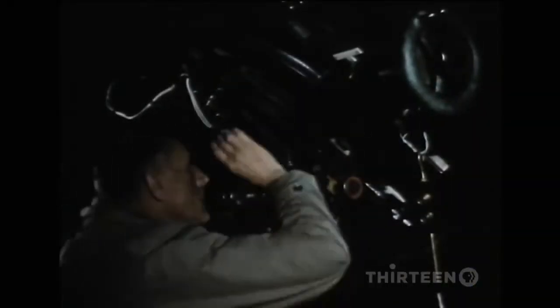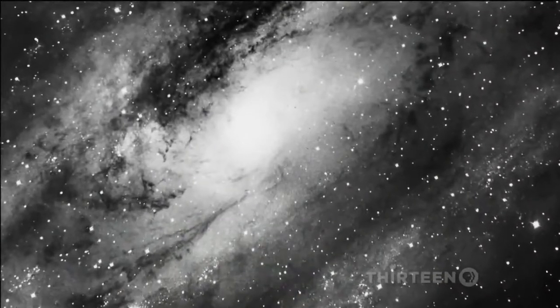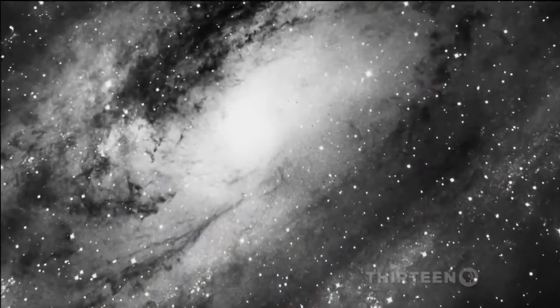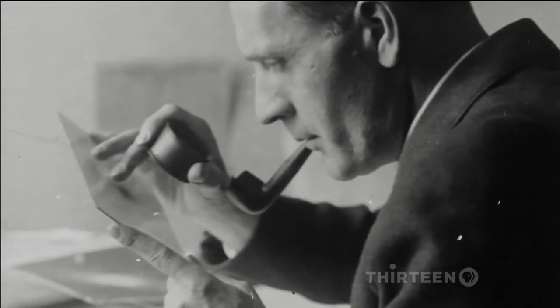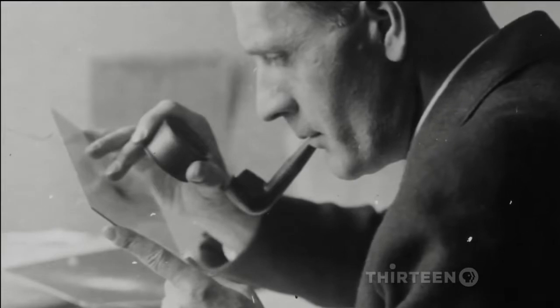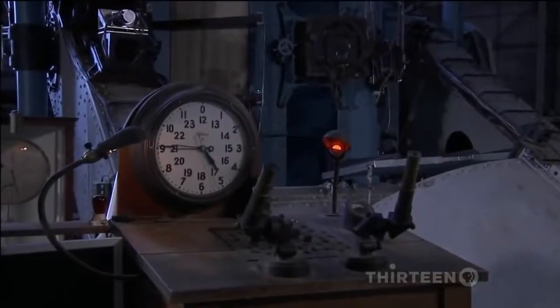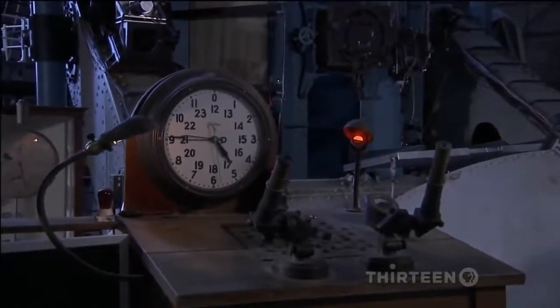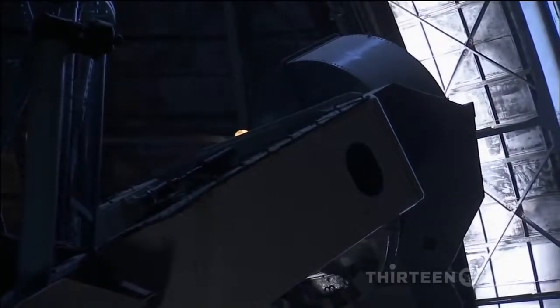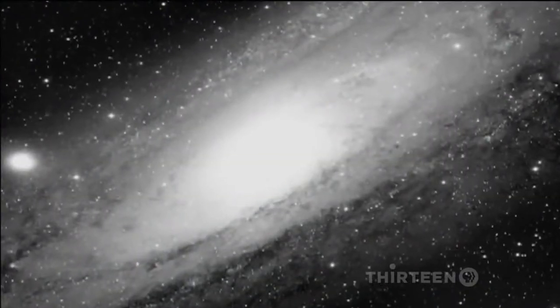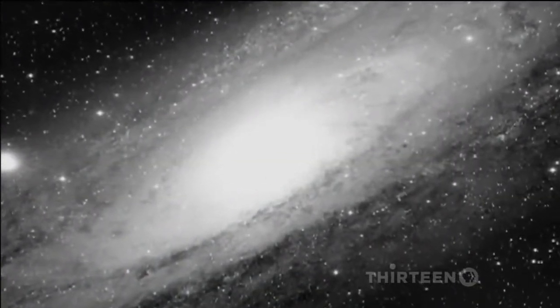At night, he scans the heavens with a hundred-inch mirror. By day, he analyzes the photographs he has taken, hunting for any stars that have changed brightness. Then, on October 6th, 1923, after months of work, Hubble strikes gold: a Cepheid variable on the edge of Andromeda.